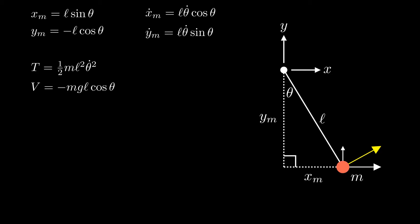Now that we have T and V, we can plug into our Lagrangian. L is T minus V, so we just substitute and then simplify to get an expression for L.